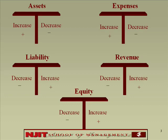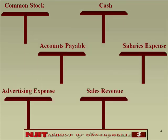I want you to do a short exercise — it won't take you more than five minutes. I'm going to show you six accounts. Here they are: common stock, cash, accounts payable, salaries expense, advertising expense, sales revenue.